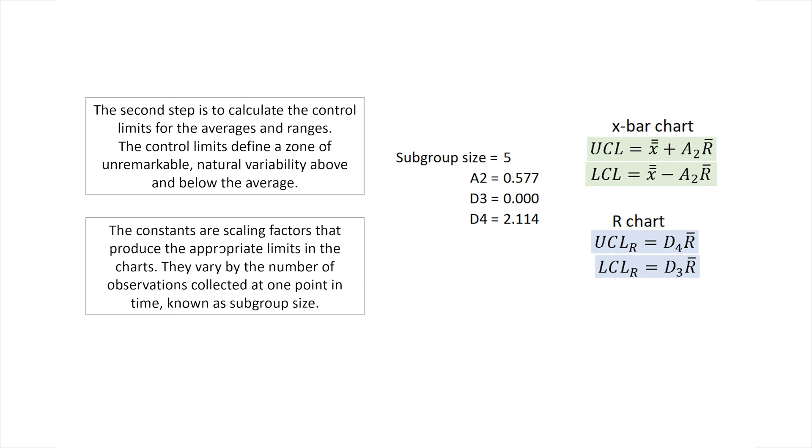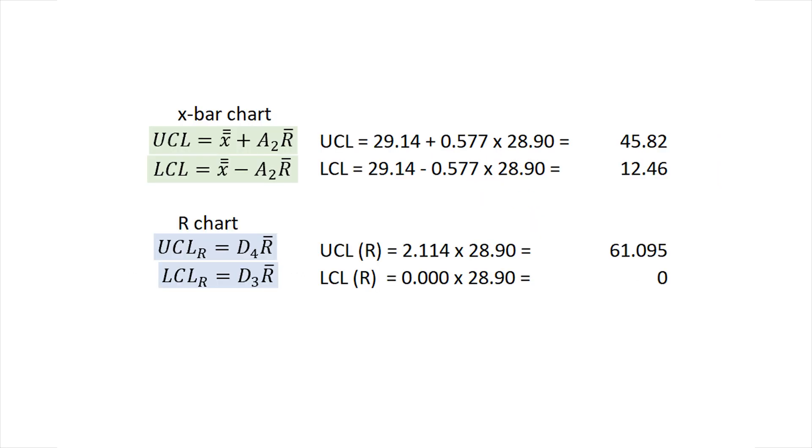The calculation is done for both the X-bar, or average, and for the range R. Each one of these two is going to have its own chart, and the limits are calculated to be: upper control limit for the X-bar 45.82, and the lower control limit 12.46. For the range, the upper and lower control limits are respectively 61.095 and 0. And now we have the control limits for the averages and range calculated following this procedure.